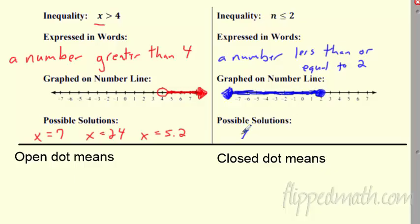So I'm going to have a closed dot on that. What are possible solutions? Eh, negative 14. That's over here. What else is over there? I see a 0. I see 1. Could it be 2? Yes. 2 is also a solution because it could be equal to 2. Awesome.